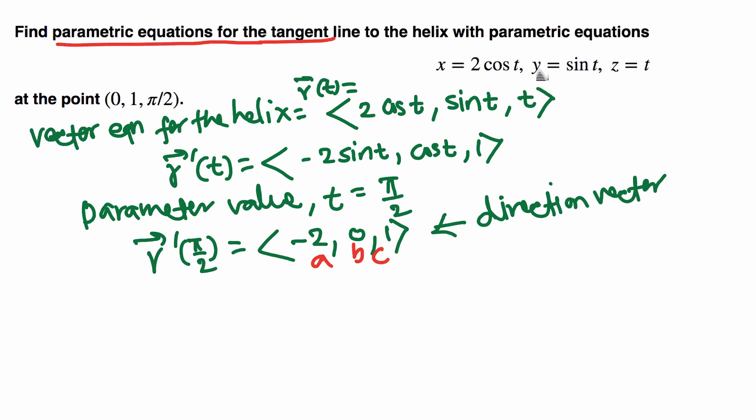Now to write down the parametric equations for the line we need a point. Point is given here: (0, 1, π/2). Now we just found a direction vector. Thus the answer is x = x₀ + at, y = y₀ + bt, and z = z₀ + ct.